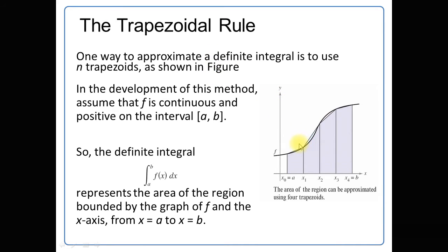By using the trapezoidal rule, we need to construct trapezoids from the original figure. This is the function f(x) — a non-linear function. This curve represents our given equation. We construct trapezoids from the original figure: the first trapezoid, second trapezoid, third trapezoid, and fourth trapezoid. You see over here there is some error — the results are not complete. We can find the approximate value by using the trapezoidal rule because the area is not perfectly covered — there is a small error.